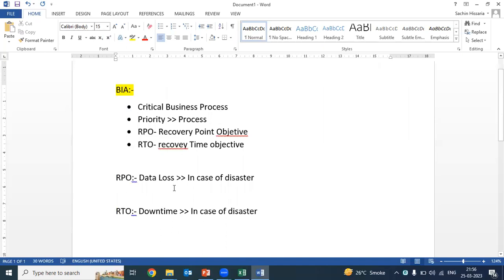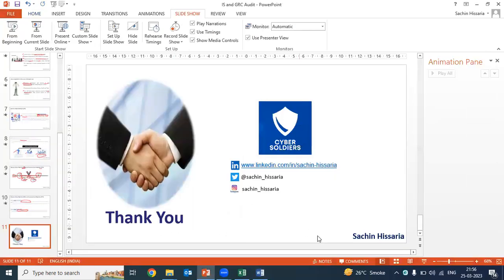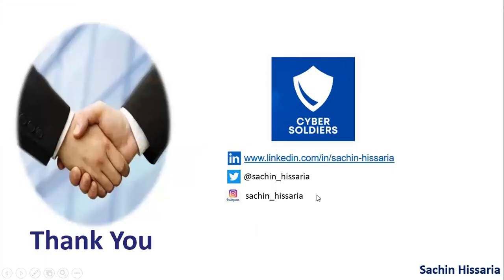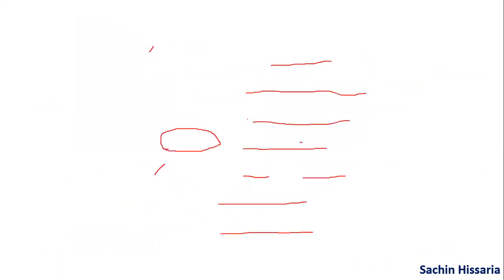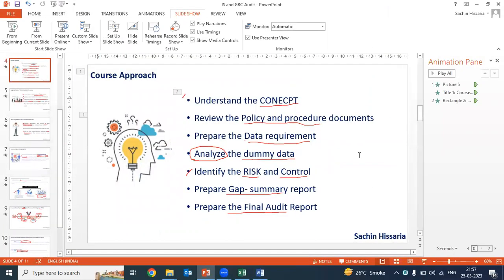This is what we have discussed till now. This is just one topic — similarly, we will be discussing a lot of topics during this course. The approach — as I have already told you — first we will discuss the theory and concept part. Then we will review the policies and procedures. Basis on this BIA, we will be preparing our Business Continuity Planning and Disaster Recovery Planning. We will review that, then prepare our initial data requirement list, then review some dummy data, identify our observations, and prepare the gap summary report.